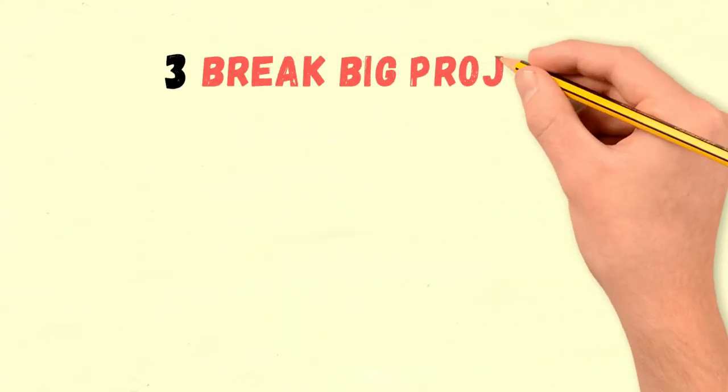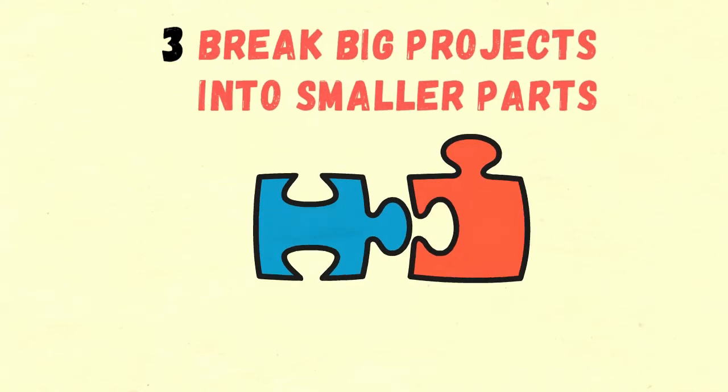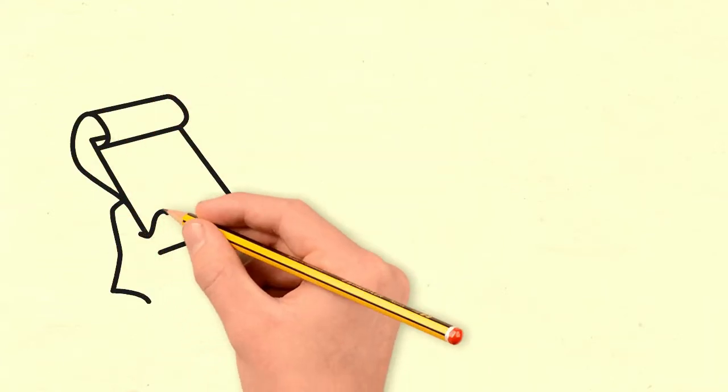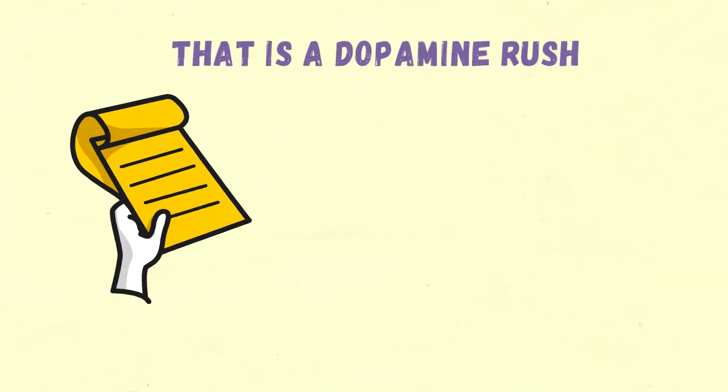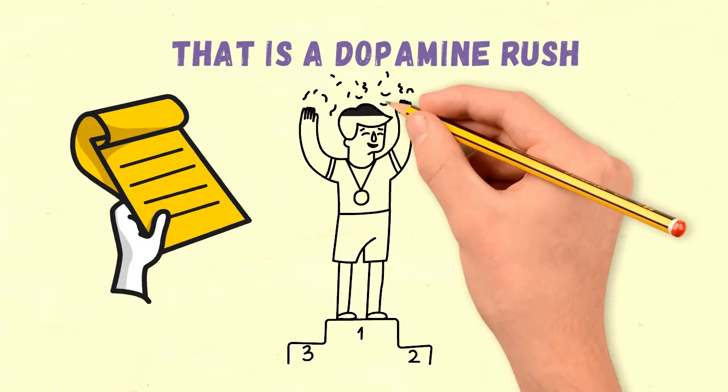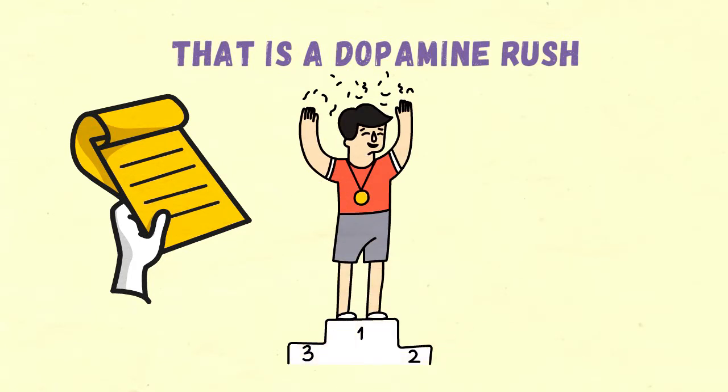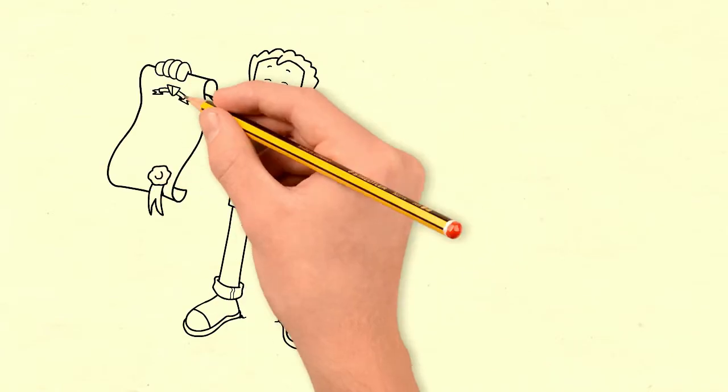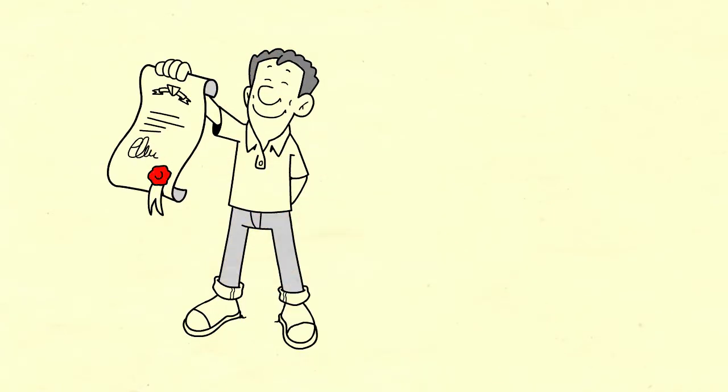Three, break big projects into smaller parts. You've probably had that thrill of fulfillment as you cross something off your to-do list. That is a dopamine rush, my friend. Remember that while dopamine rushes happen when you get a reward, they've already done most of the work. When you're offered a reward, your dopamine levels rise to encourage you to take it.